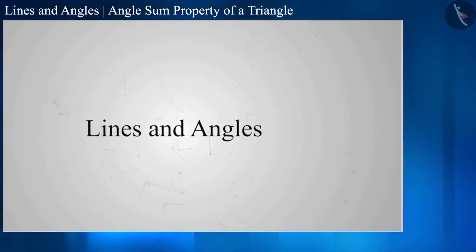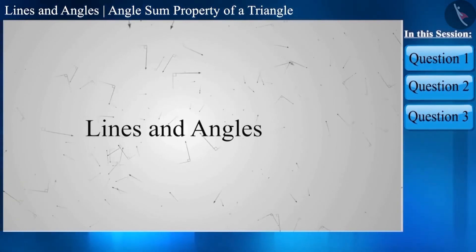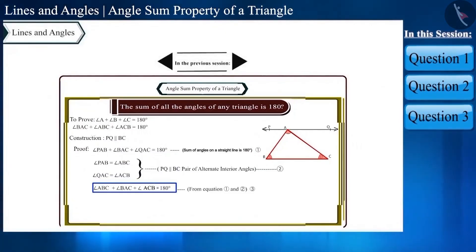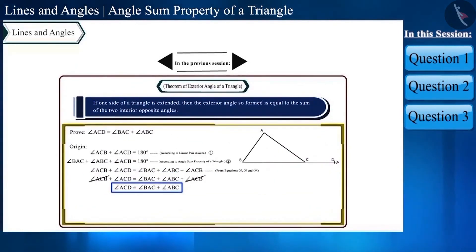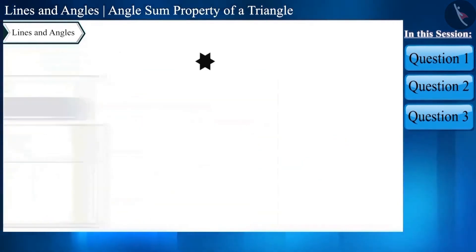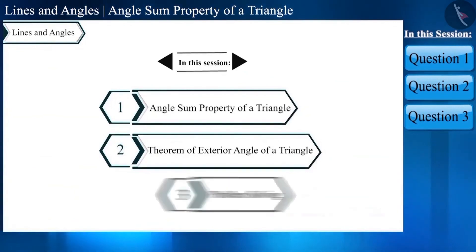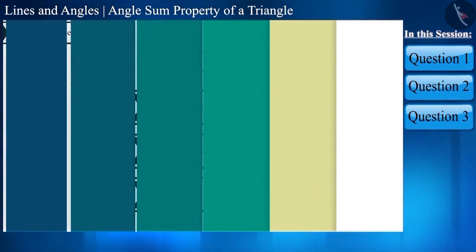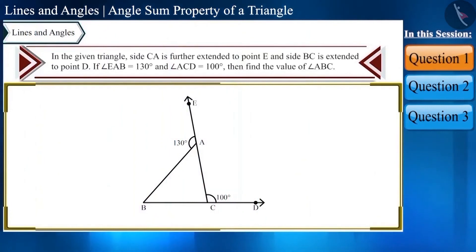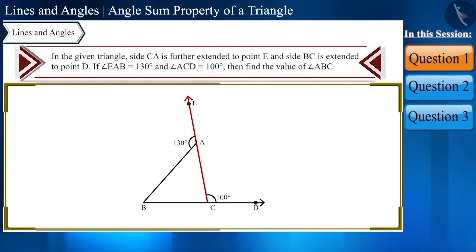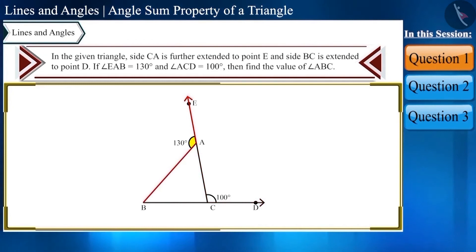Hello friends, welcome to this video on lines and angles. In the previous video we learned about the angle sum property and exterior angle theorem of a triangle. Today we will solve some questions. First question: side CA is extended to E and side BC is extended to D. If angle EAB equals 130 degrees and angle ACD equals 100 degrees, find angle ABC.